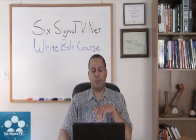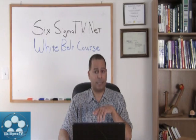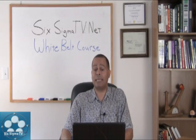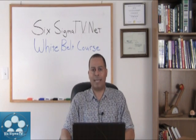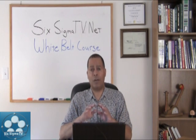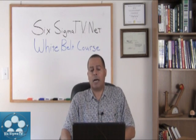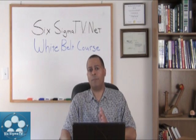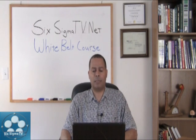We also want to look at process capability in the analyze phase — we want to see where your process is in relation to the target. If you go to the website and look at the episode called CPK or process capability, we talk in depth about how to use this to understand the location of your process and how much variation and spread is creating fallout beyond your requirements — beyond your spec limits in manufacturing, or beyond the voice of the customer in a service environment.